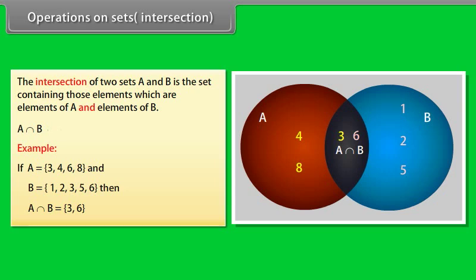Look at this diagram now. This dark portion indicates A intersection B.